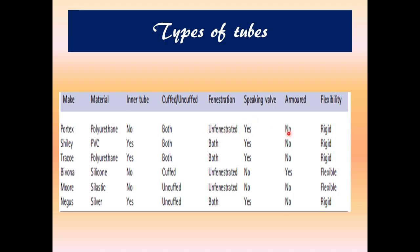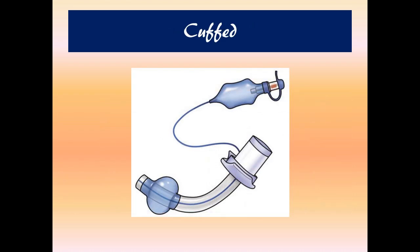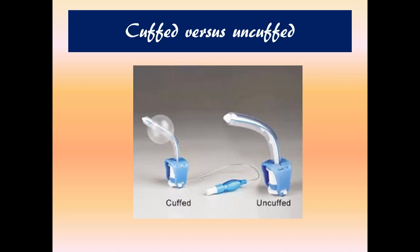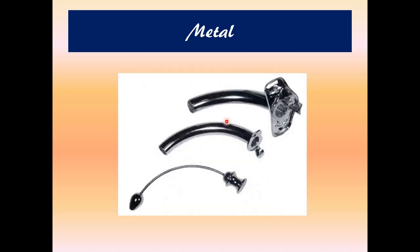It has a speaking valve, is not armored, and is rigid. A cuffed tracheostomy tube uses the pilot balloon to instill air into the cuff, which prevents dislodgement and reduces chances of aspiration. An uncuffed tube is fashioned in a way that it will not dislodge without needing air inflation. A metal tracheostomy tube consists of an outer tube, inner cannula, and obturator — this is one of the more traditional types.